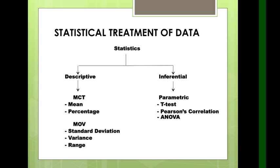Let us first identify the two types of statistical treatment. We have descriptive and inferential statistics. For descriptive treatment, we usually use the mean, the percentage, the measure of variability which is the standard deviation, the variance, and the range. We also use frequency and count when doing descriptive statistics.